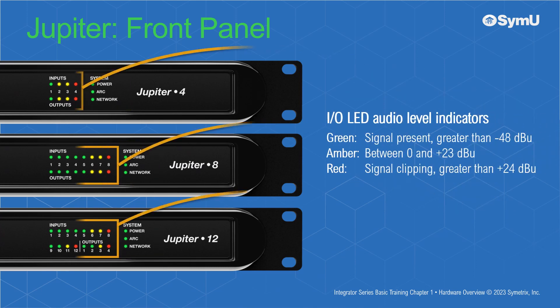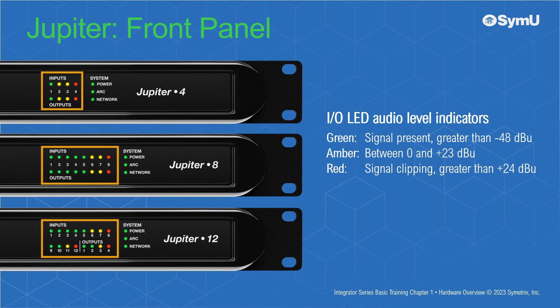The front panel also has I/O bi-colored LEDs indicating audio levels. Green indicates signal present greater than negative 48 dBu, amber indicates signals between zero and plus 23 dBu, and red indicates clipping at greater than plus 24 dBu.